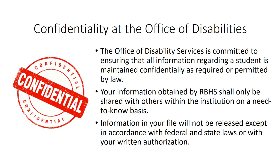If you have a disability and are not sure about applying for accommodations because of confidentiality issues, please keep in mind that the RBHS Office of Disability Services is committed to ensuring that all information regarding a student is maintained confidentially as required or permitted by law. Students are informed of their confidentiality rights during their first meeting with ODS. Your information will only be shared with others within the institution on a need-to-know basis, and only the Disability Services staff has immediate access to your files and records. With a student's permission, university faculty and staff may be informed of the student's accommodations, but not their disability or diagnosis.